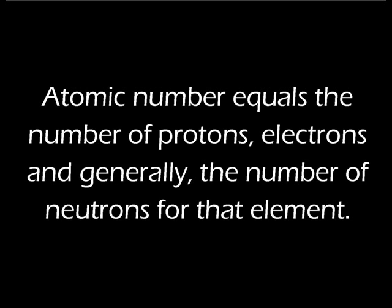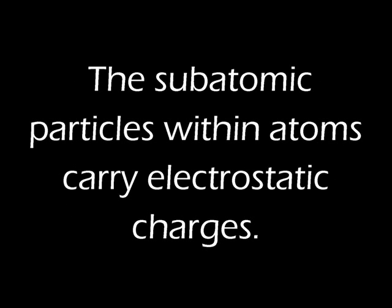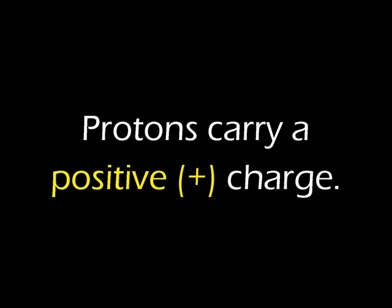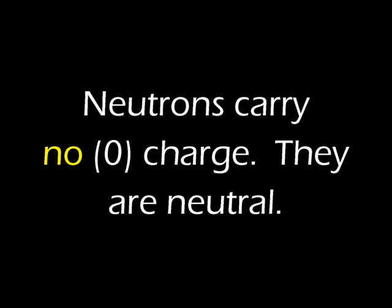Based upon some experiments done by some famous chemists, it is accepted that electrons and protons carry an electrostatic charge. You might think of an electrostatic charge as being like the tiny spark you can elicit after you shuffle your feet across a carpet and then touch a doorknob. The spark you see and can even feel is negatively charged electrons moving from you through the air to the doorknob. On the atomic level, electrons carry a negative electrostatic charge, while protons carry a positive electrostatic charge. Neutrons carry a neutral or no charge at all.